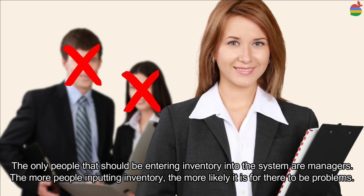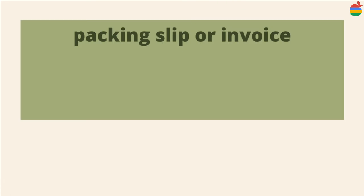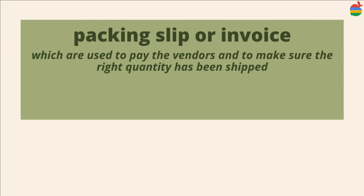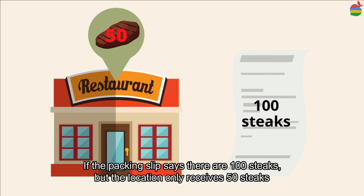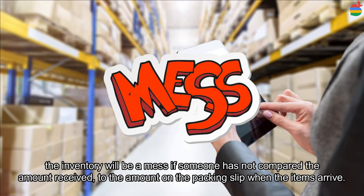The only people that should be entering inventory into the system are managers. The more people inputting information, the more likely problems will occur. All shipments should come with a packing slip or invoice, and it is essential for managers to keep all invoices, which are used to pay the vendor and to make sure the right quantity has been shipped. If the packing slip says there are 100 steaks but the location only receives 50, the inventory will be a mess if someone has not compared the amount received to the amount on the packing slip.